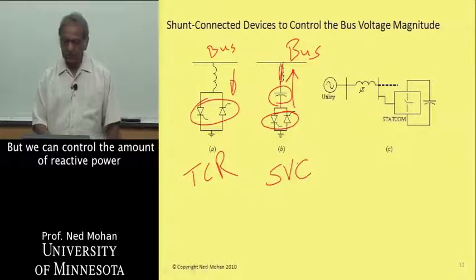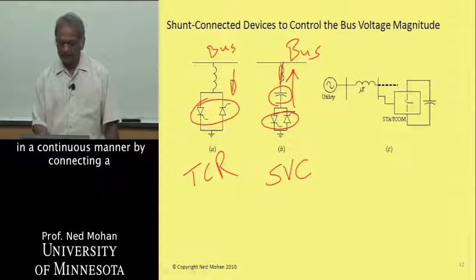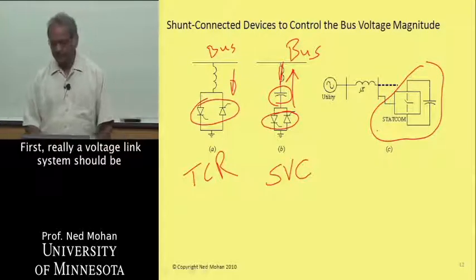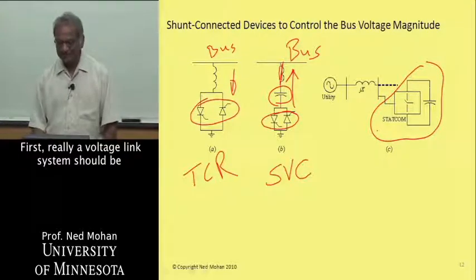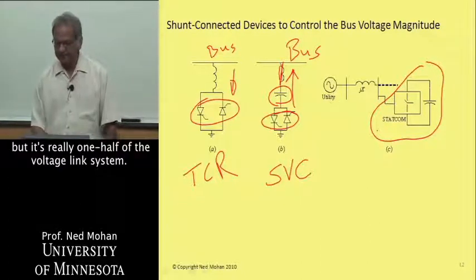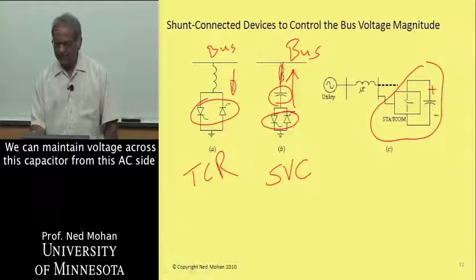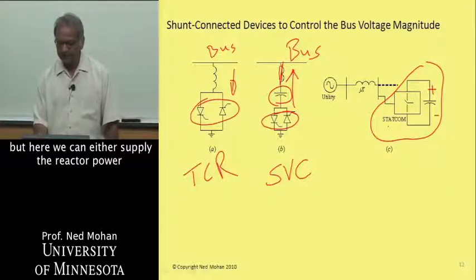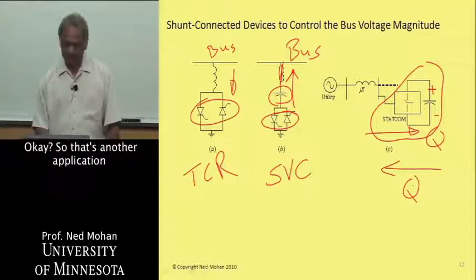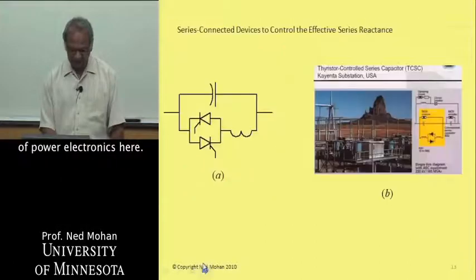We can control the amount of reactive power continuously by connecting a static compensator, or STATCOM. It's really a voltage-linked system, or one-half of a voltage-linked system. We can maintain the voltage across the capacitor from the AC side, and either supply or draw reactive power. It's a very flexible device and another application of power electronics.